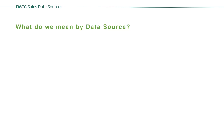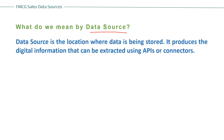So what do we mean by data source? A data source is the location where data is being stored. It produces the digital information that can be extracted using APIs or connectors. For example, if you have ERP — let's say it is SAP — you can use APIs to pull the data from SAP to any particular place. This is how you can capture and retrieve the data.